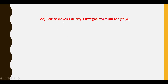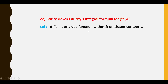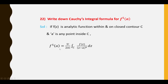Twenty-second question: Write down Cauchy's integral formula for the fifth derivative F⁽⁵⁾(a). If F(Z) is analytic within and on closed contour C and a is any point inside C, then F⁽⁵⁾(a) = (5!/2πi) ∮_C F(Z)/(Z − a)⁶ dZ.